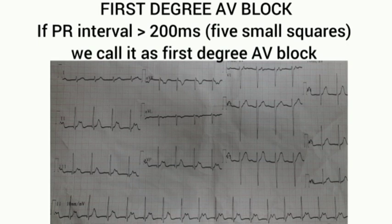First degree AV block: if the PR interval is greater than 200 milliseconds, we call it a first degree AV block. In first degree AV block, PR interval is prolonged. Normal PR interval is 3 to 5 small boxes.